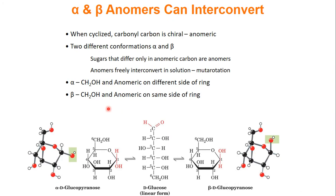When you form these cyclized sugars, your former carbonyl carbon — the one that got attacked by your alcohol group — is now chiral. We call this carbon the anomeric carbon. When looking at a ring, the anomeric carbon was your former carbonyl carbon, and it got attacked by an alcohol group. So it is the carbon attached to two oxygens.